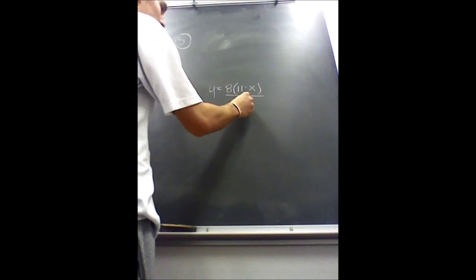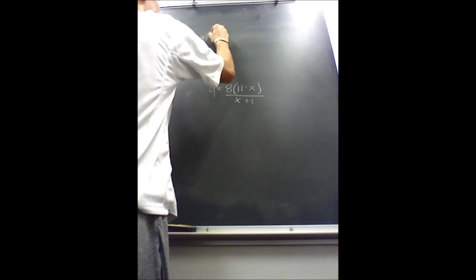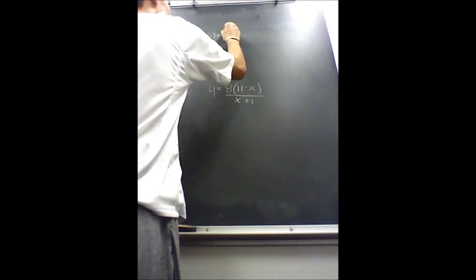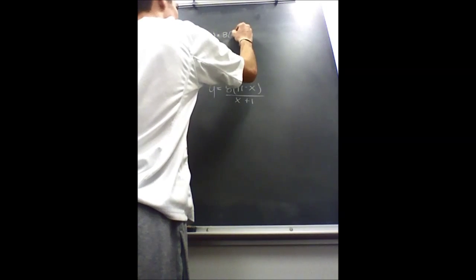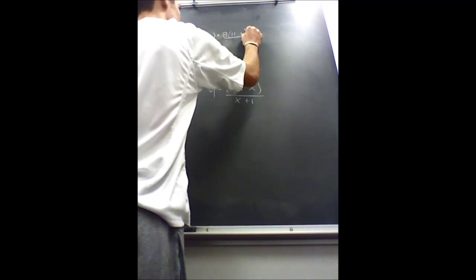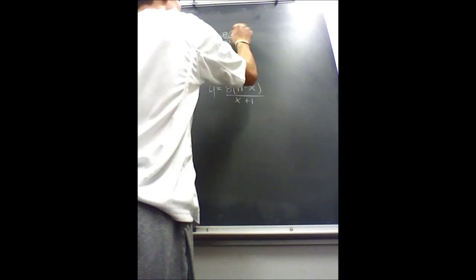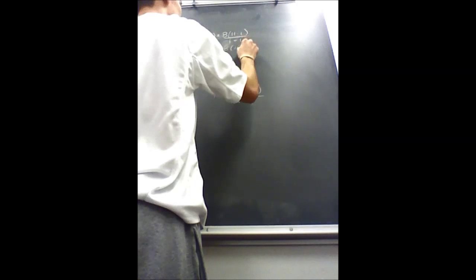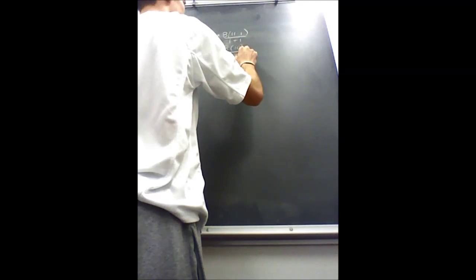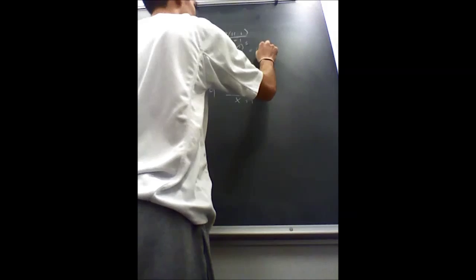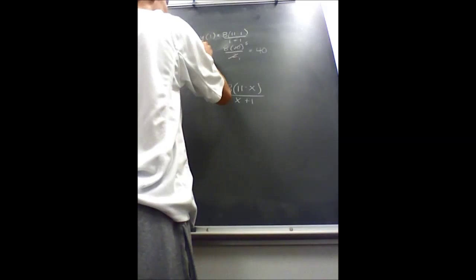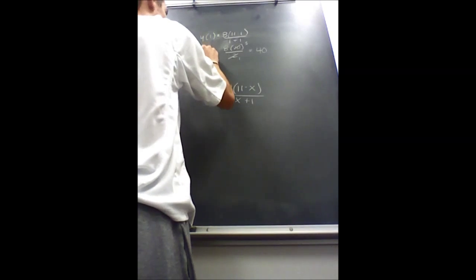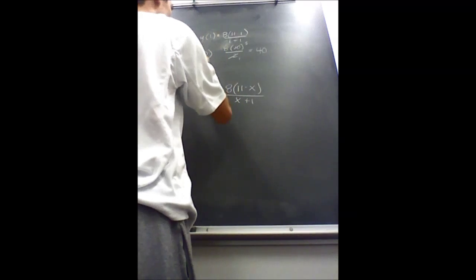With this being our function, I just begin to plug in the integers. And this is 8 times 10 over 2, and the 2 cancels, leaving you with 40. Therefore, you know that 1, 40 works.